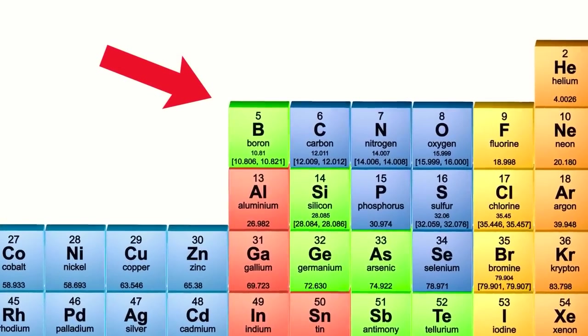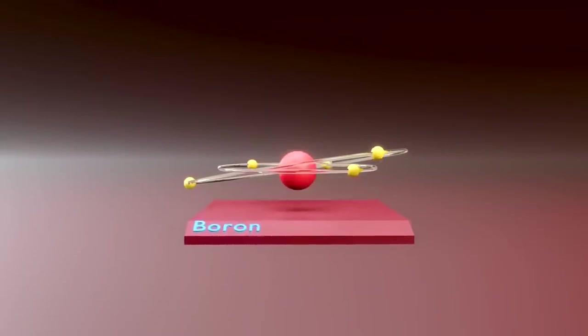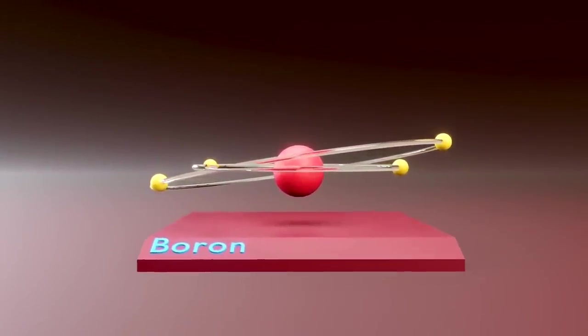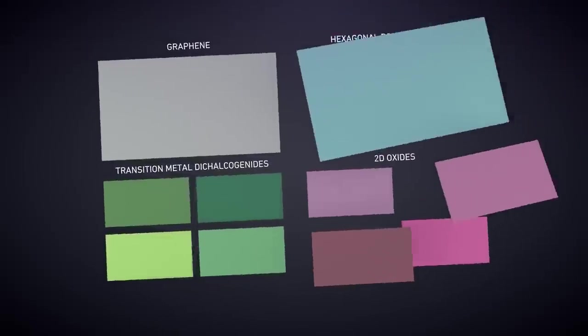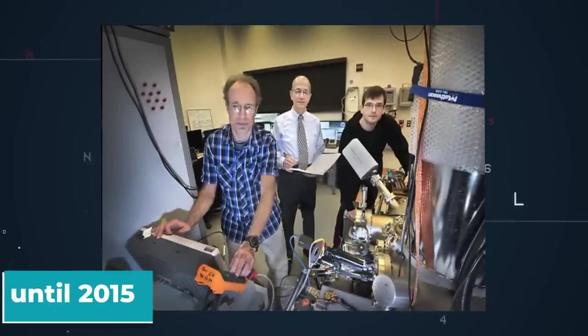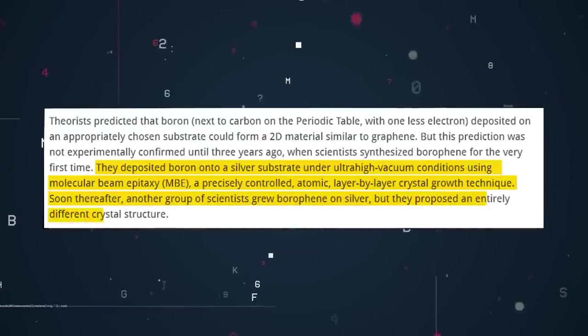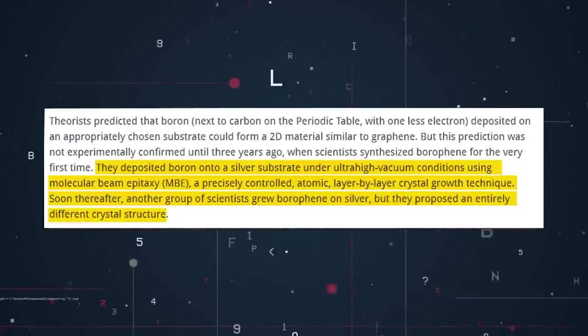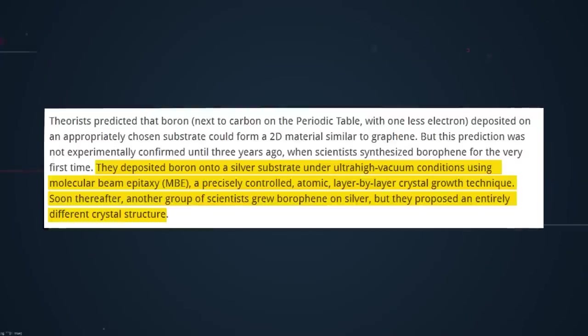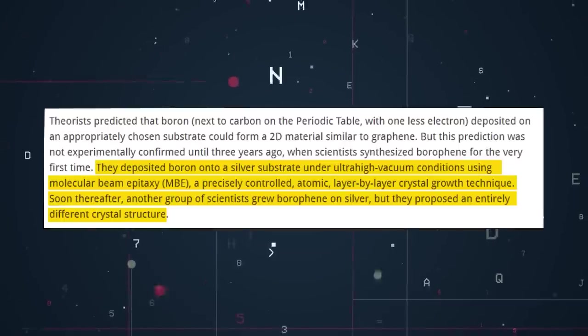Boron is next to carbon on the periodic table, having one less electron. This made some scientists predict that boron deposited on an appropriately chosen substrate could form a 2D material similar to graphene. However, nobody could experimentally validate the prediction until 2015, when scientists synthesized borophene for the very first time. They deposited boron onto silver substrates under ultra-high vacuum conditions through molecular beam epitaxy. Not long after that, another group of scientists grew borophene on silver, but they proposed an entirely different crystal structure.